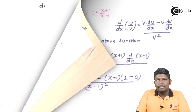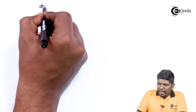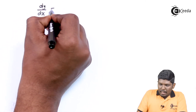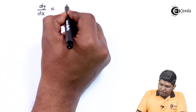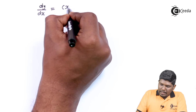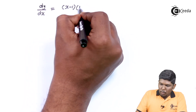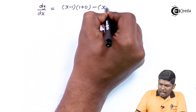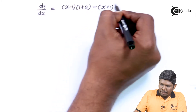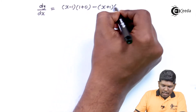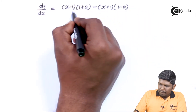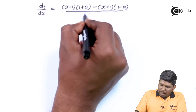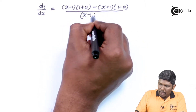So dy/dx equals (x - 1) into (1 + 0) minus (x + 1) into (1 - 0), all upon (x - 1) squared.